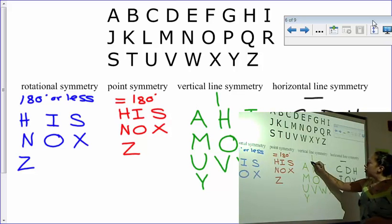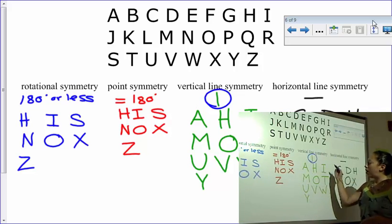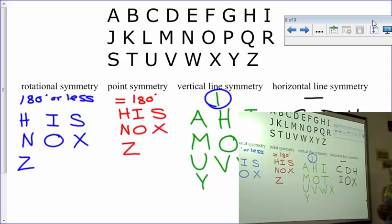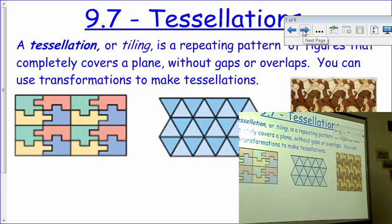Vertical line symmetry, we're talking about going straight up and down. Can I fold it over itself from one side to the other? Is it the same? And this time we have A, H, I, M, O, T, U, V, W, X, and Y. And then for horizontal line symmetry, can I fold it up to down and map onto itself? We've got only the letters C, D, H, I, O, and X.